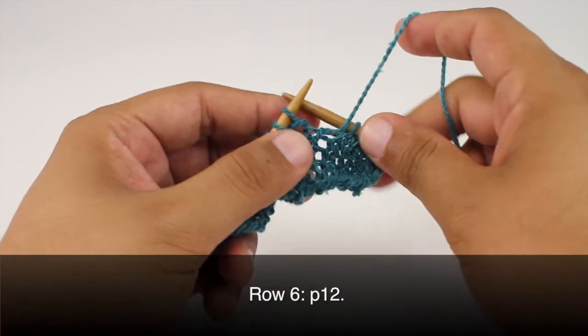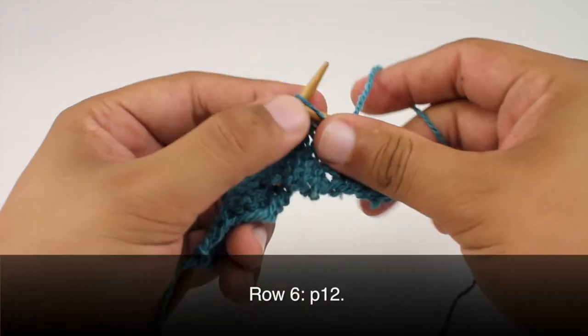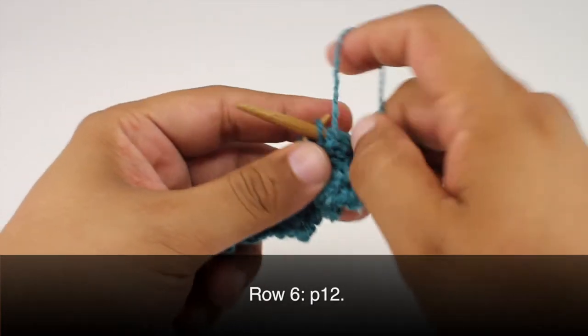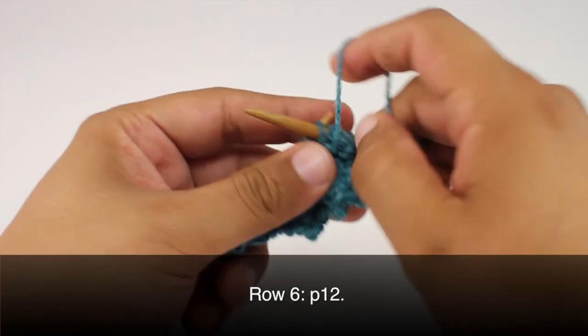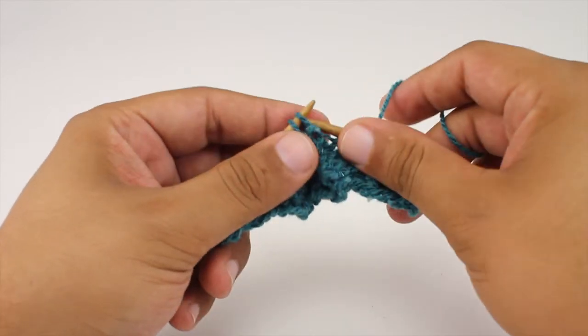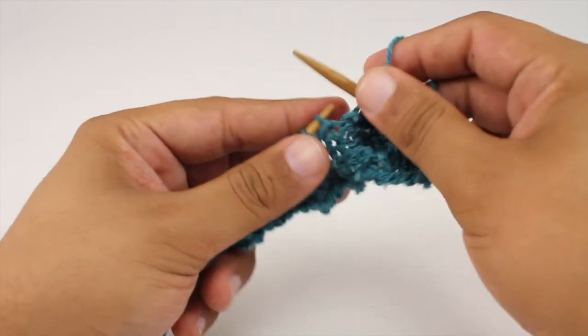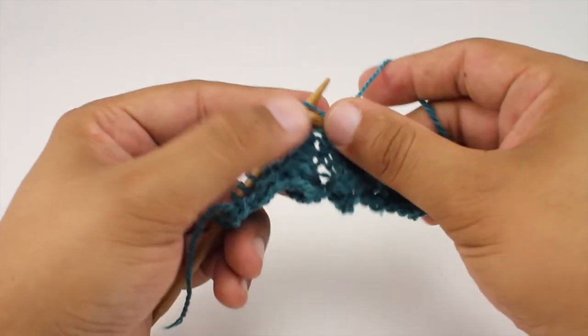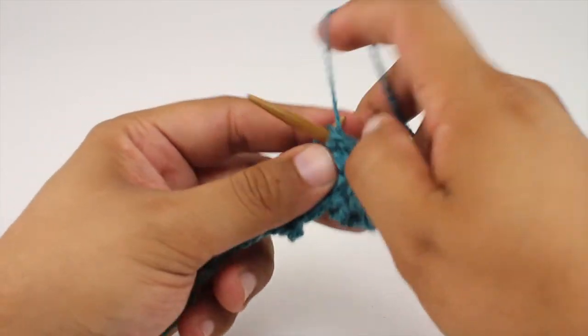Row six, we're going to repeat Row 2 and purl 12. So repeat Rows 1 through 6 until you've reached your desired length. And that's how you knit the Ascending Tulips Cable Stitch.